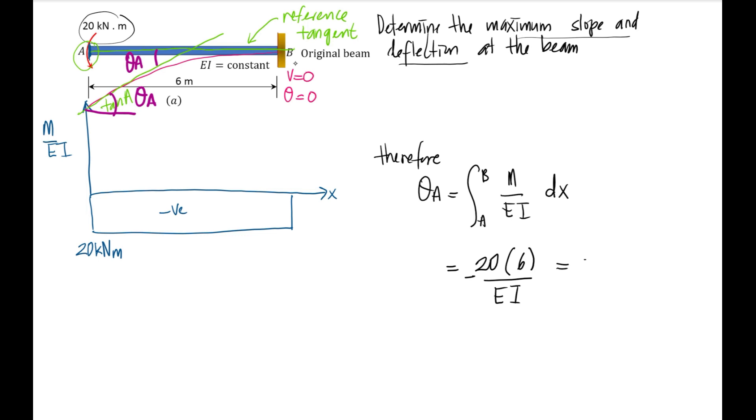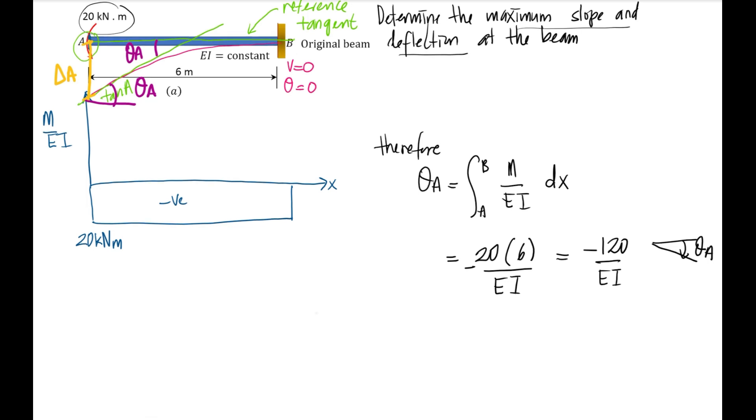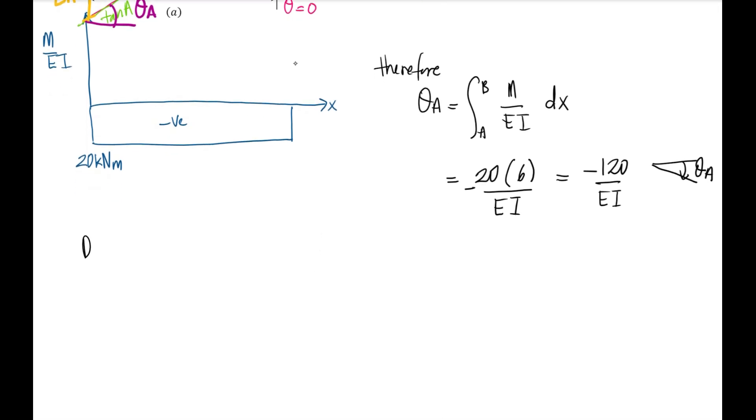Next, we need to define the maximum deflection. So we draw the tangent deviation at the end of the cantilever at point A. This will be Δ_A. Based on here, you have two tangents, and this is the reference tangent. Therefore, for deflection of the beam,